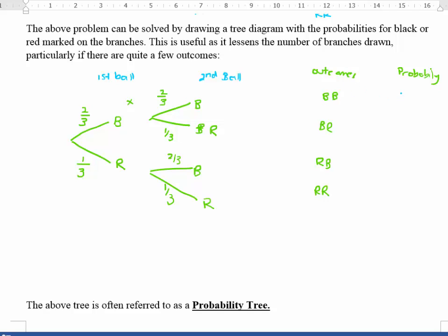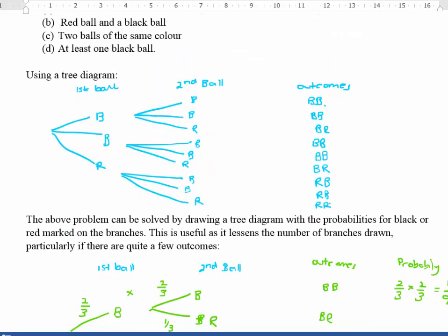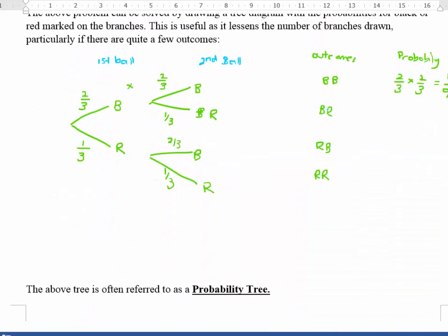The probability of getting black and black is two out of three times two out of three, which gives four out of nine. If we go back and look at the previous traditional tree, counting up black-black outcomes also gives four out of nine. So you can see this is just a simpler way of arriving at the correct answer.